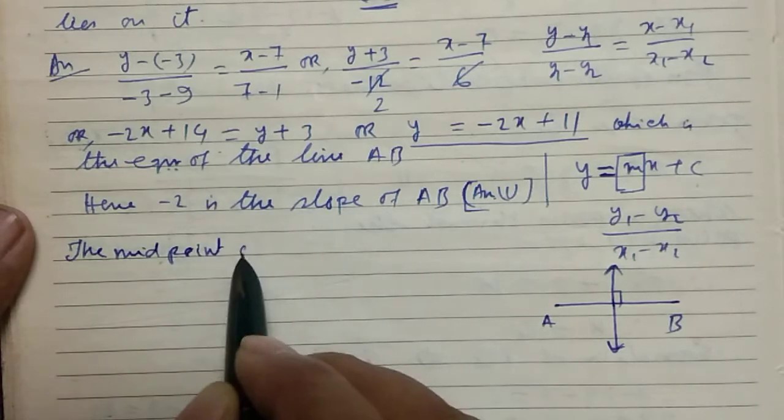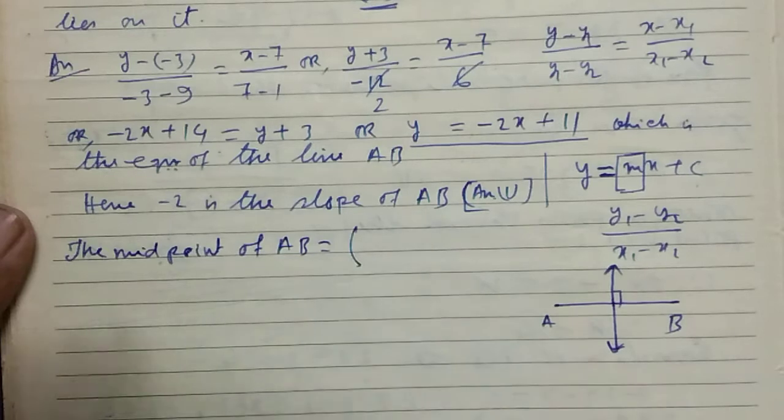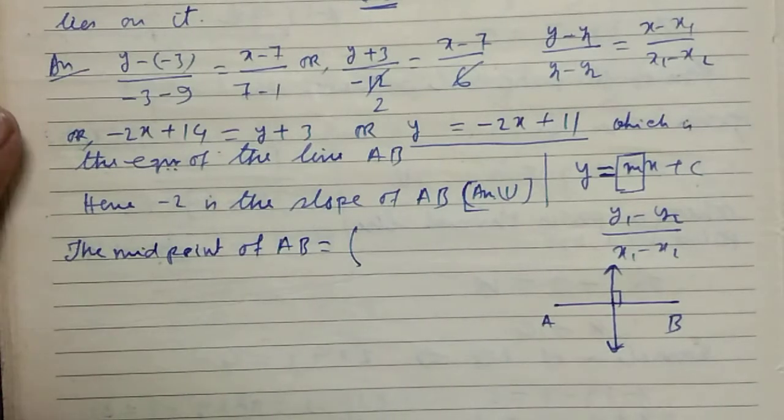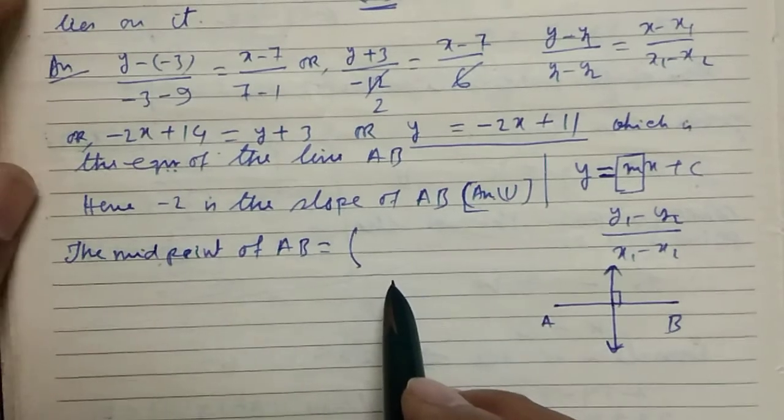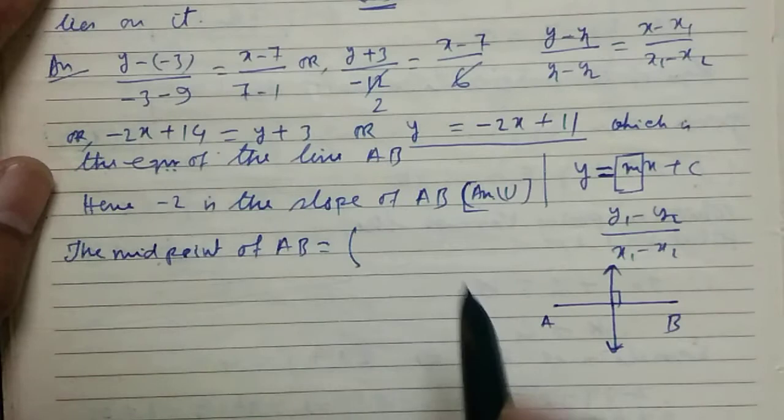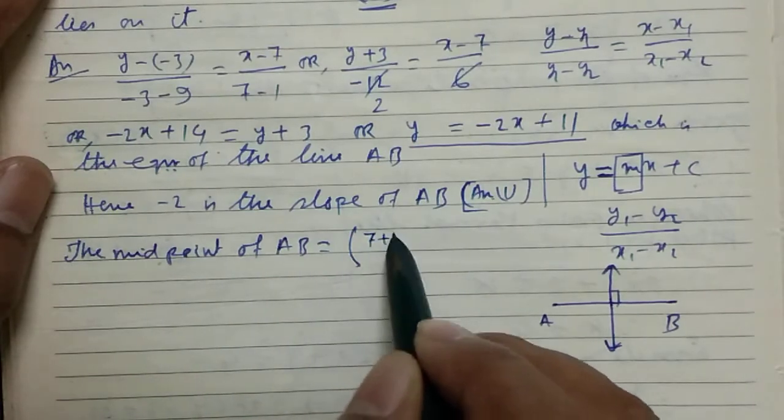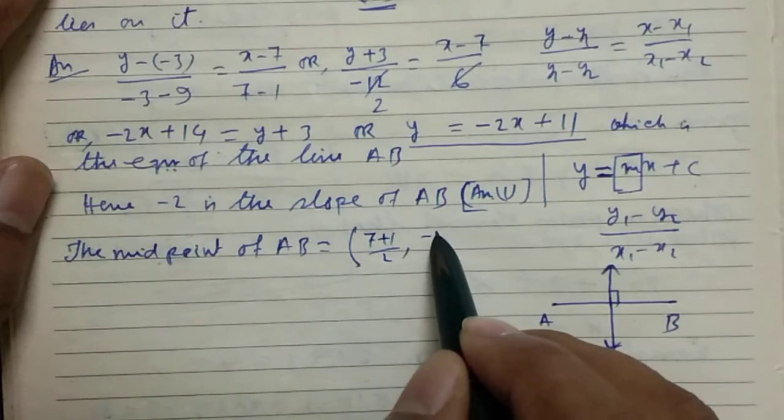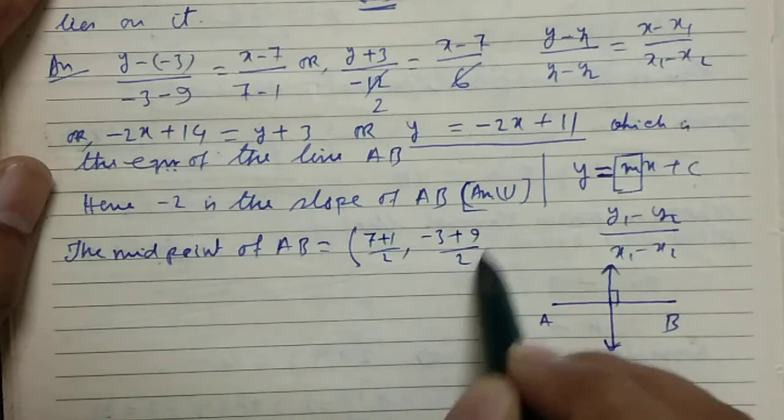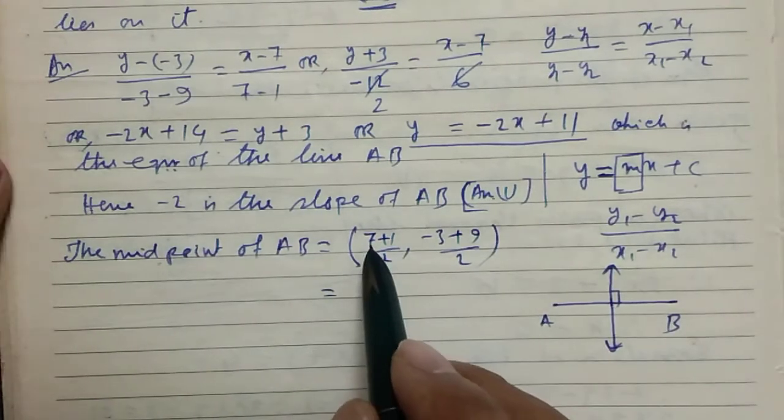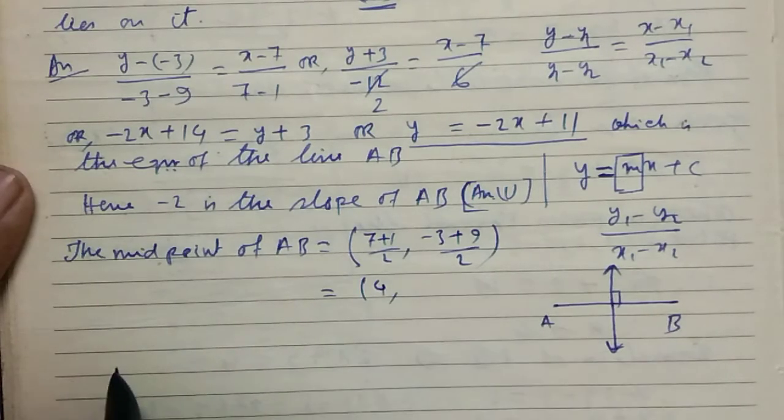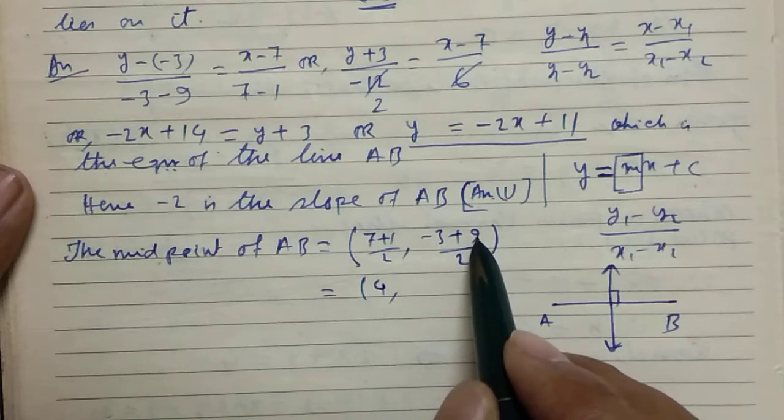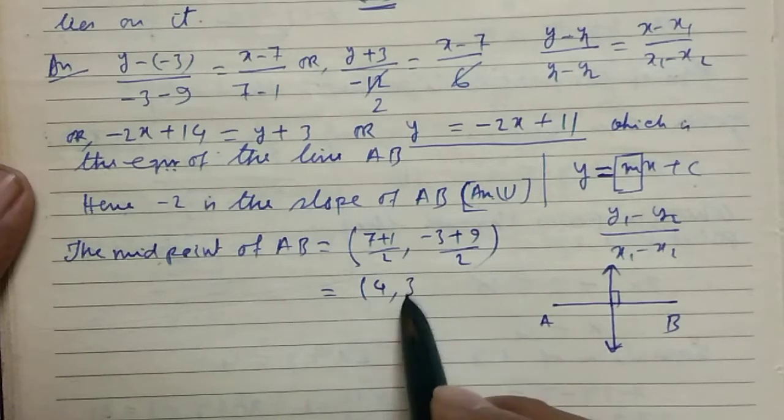The midpoint of AB. What is the midpoint formula? (x1 + x2)/2, (y1 + y2)/2. (x1 + x2)/2 equals (7 + 1)/2 equals 8/2 equals 4. (y1 + y2)/2 equals (-3 + 9)/2 equals 6/2 equals 3.